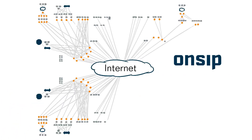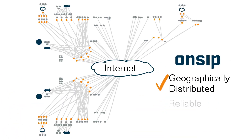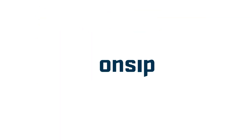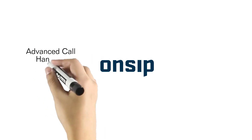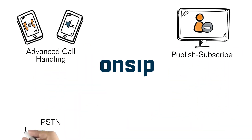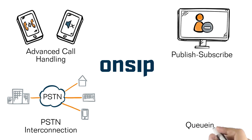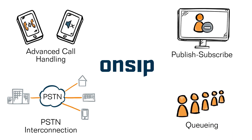The OnSIP network is geographically distributed, reliable, and scalable. If you need it, OnSIP supports advanced call handling, publish-subscribe, PSTN interconnection, applications like queuing, and much more.